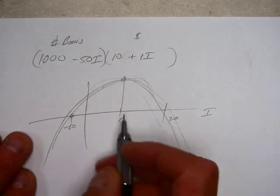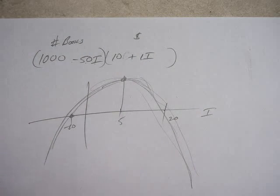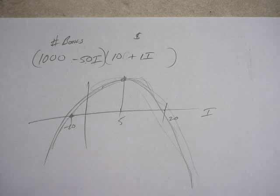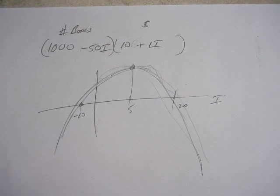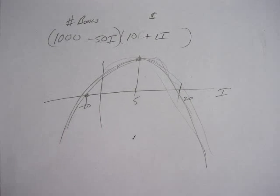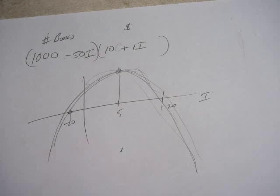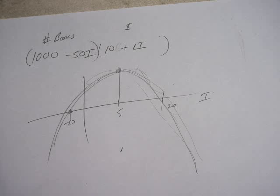Then how would I find how many books I was going to sell? Plug in 5, because 5 is halfway between 10 and 20. Since it's quadratic, it's going to be symmetric and there's my line of symmetry. If I plug in 5, it's going to give me 750 books and my price is going to be fifteen. I can go ahead and find my total revenue that way.